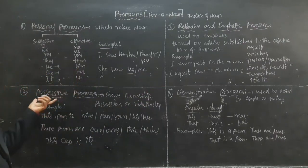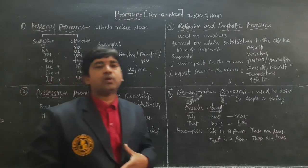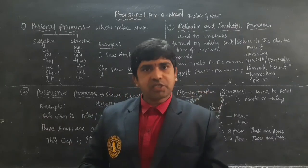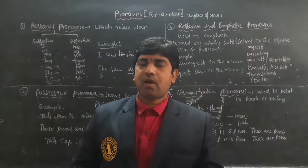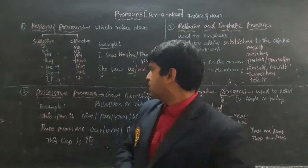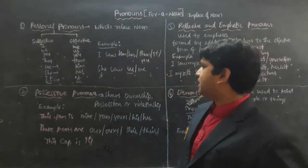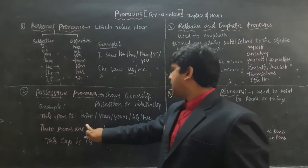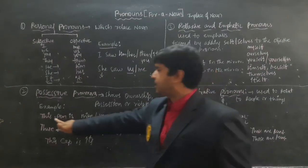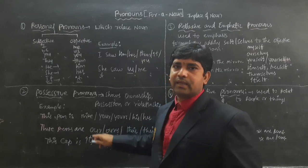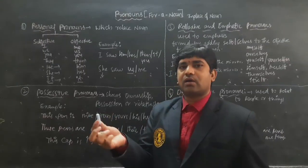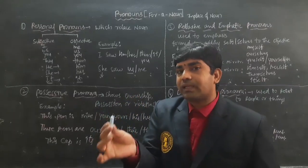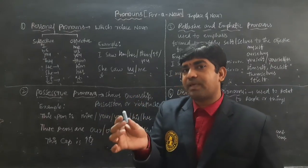The next one is Possessive Pronouns. We use Possessive Pronouns to indicate ownership, relationship, or position. For example: 'this pen is mine' or 'this piece of chalk is mine' — I have ownership of that chalk piece.